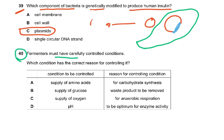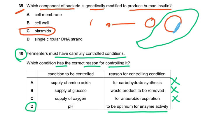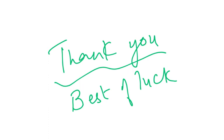Question 40: Fermentors must have carefully controlled conditions. Which condition has the correct reason for controlling it? Option A — supply of amino acids is for protein synthesis, not carbohydrate synthesis; option B — glucose is for respiration and energy release, not waste product removal; option C — supply of oxygen for anaerobic respiration makes no sense. So the answer is D — pH is controlled to be at the optimum for enzyme activity, because in a fermentor you are growing microorganisms with many enzymes working, and enzymes need a specific temperature and pH for optimum activity. This completes the second video on this paper.